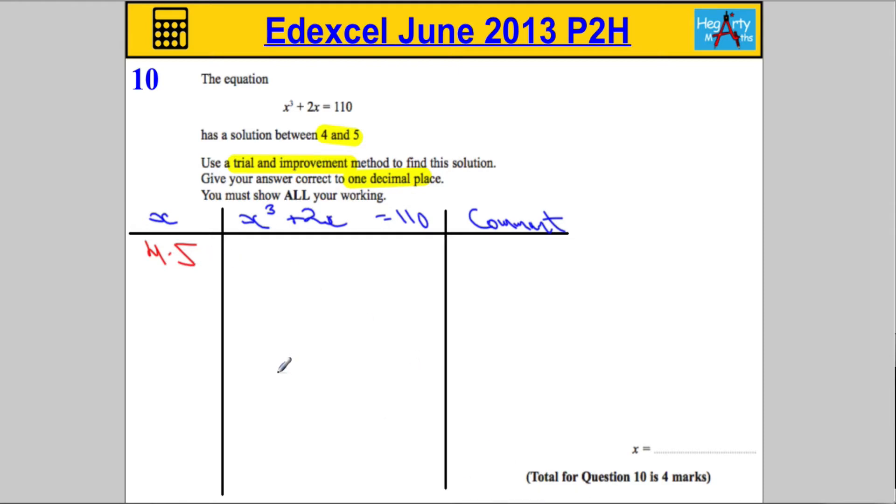So wherever I have an X I'm going to substitute 4.5. So I want to do 4.5³, I'm going to add two lots of 4.5, and we want to see what that works out as.